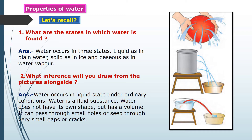What are the states in which water is found? Water occurs in three states: liquid as plain water, solid as ice, and in the gaseous state as water vapor. From the pictures alongside, we can understand that water occurs in liquid state under ordinary conditions.